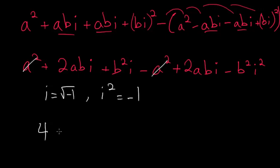So there we have 4abi, and here we have plus b squared i squared.